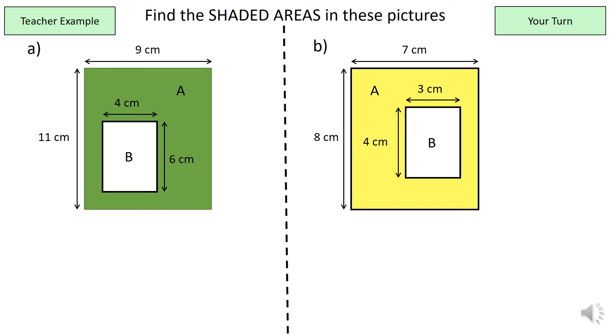And the way we find the area of this is, first of all, I've labelled the green section shape A and the white box within it shape B. So we need to find the area of each and the area of shape A is going to be 9 times 11 which is 99 centimetres squared and the area of shape B is 24 centimetres squared. Now because we don't need the area of shape B, we just need the green area, we can just subtract 24 from 99 and that will give us 75 centimetres squared.